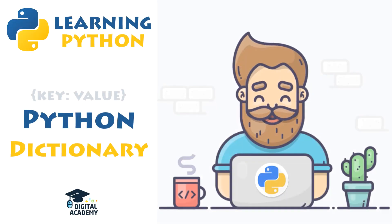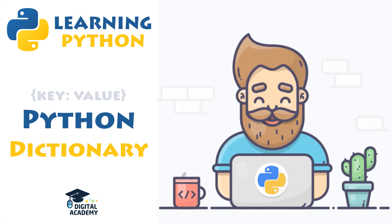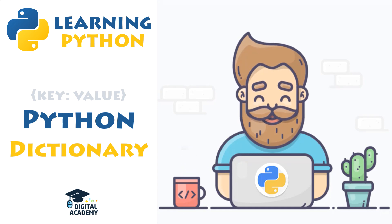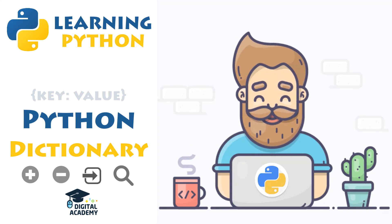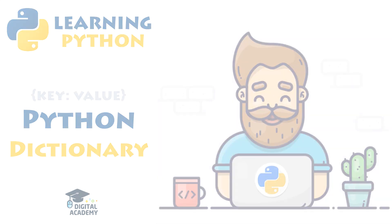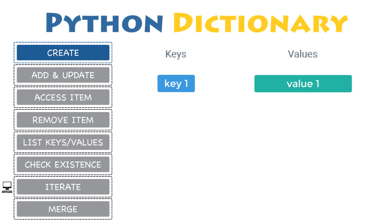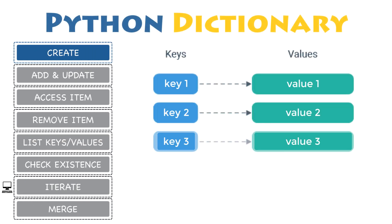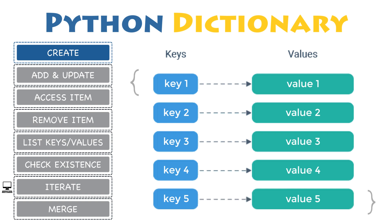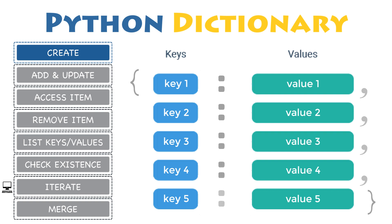Now that you have understood what a dictionary is, let's move forward and discover how to create a dictionary in Python, and all of the operations you can perform on it. Creating a dictionary in Python is as simple as placing key-value items inside curly braces, separated by commas, and each key is separated from its associated value by a colon.